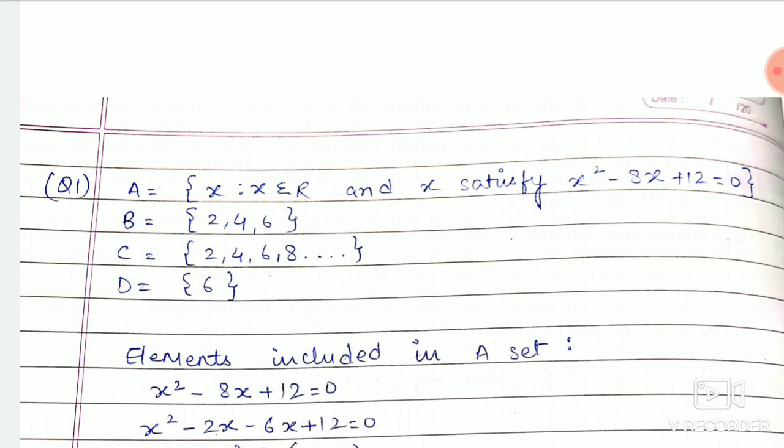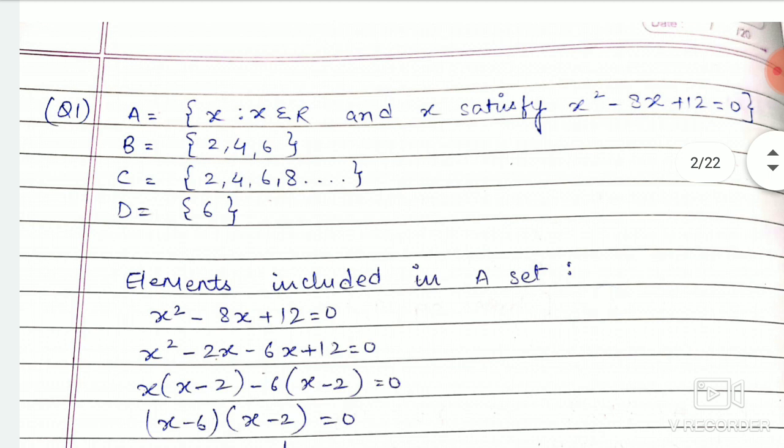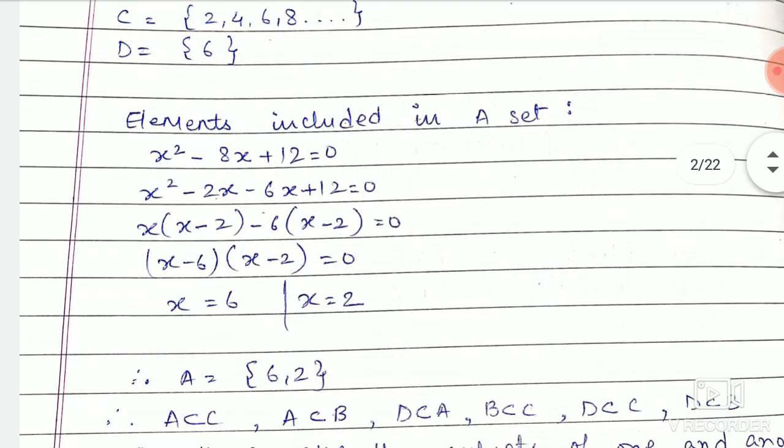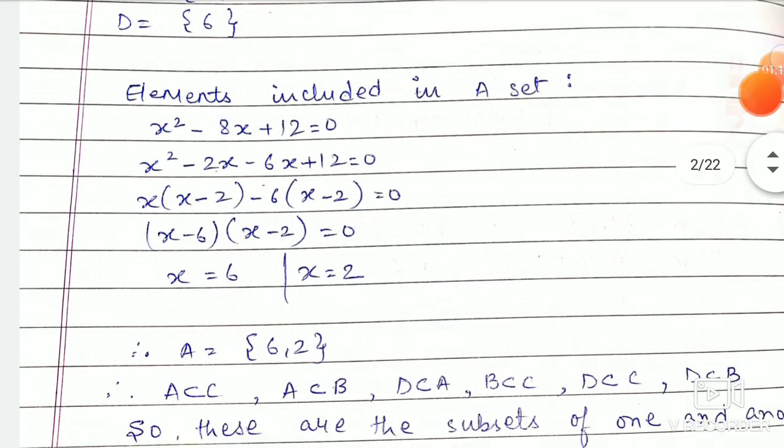D: 6. Elements included in set A: x²-8x+12=0. Using middle term factorization, x=6 or x=2. That means 6, 2 belongs to A. So A is a set consisting of two elements, 6 and 2.